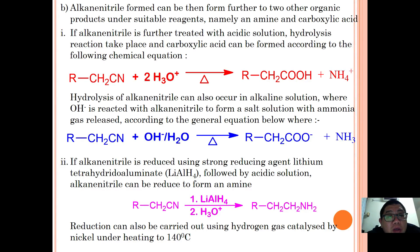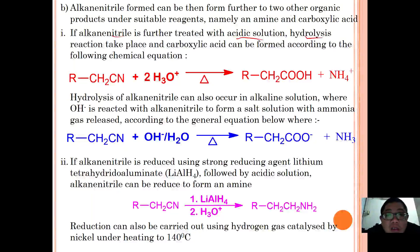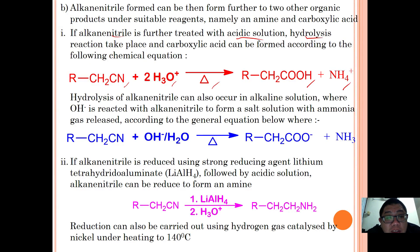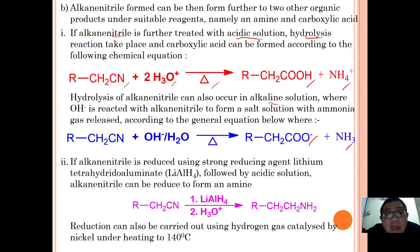The alkyl nitrile formed can be further converted to two other organic products under suitable reagents: an amine or a carboxylic acid. If the alkyl nitrile is treated with acidic aqueous solution under reflux, hydrolysis takes place: RCH2CN reacts with acidic aqueous solution to form carboxylic acid with ammonium ion released. Hydrolysis can also occur in alkaline aqueous solution using hydroxide ion, forming a carboxylate salt with ammonia released as a side product.